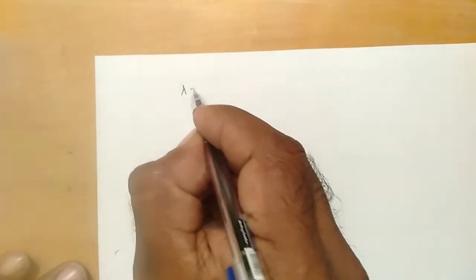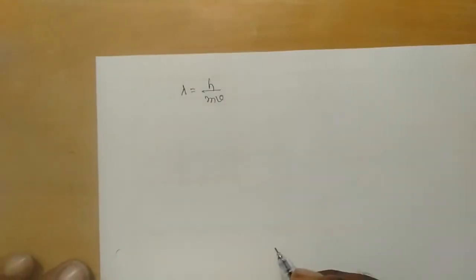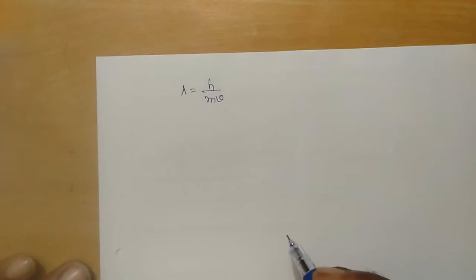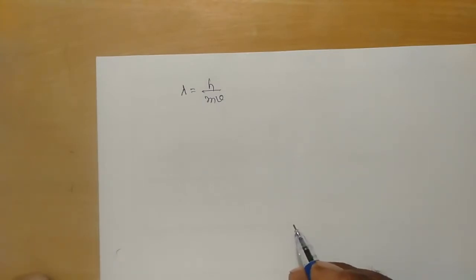The expression for the de Broglie wavelength of a material particle in motion is given by lambda equals h divided by m times v.